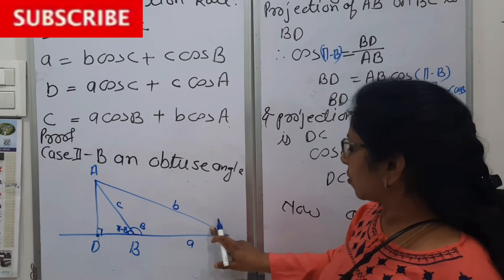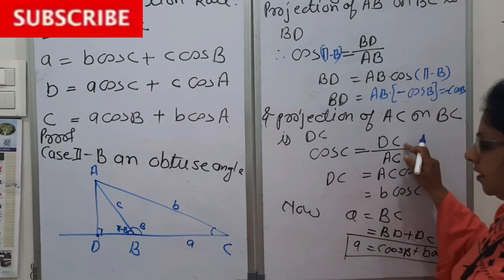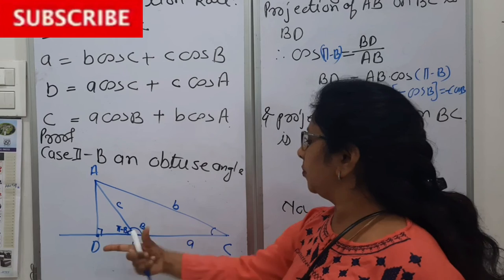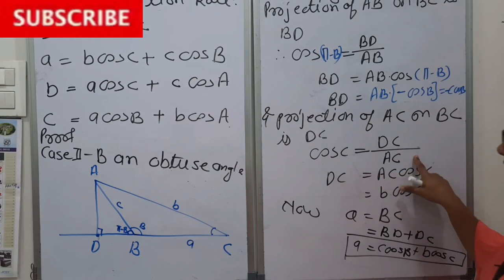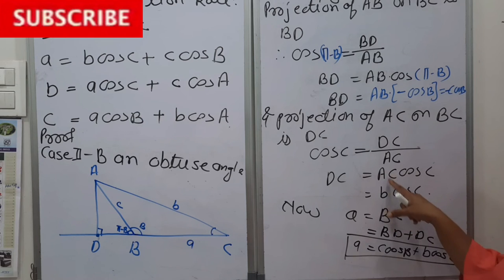So cos C is DC over AC. So DC equals AC cos C. AC is b, means this part is as it is.